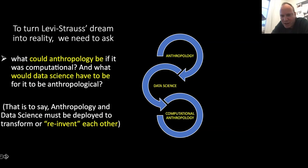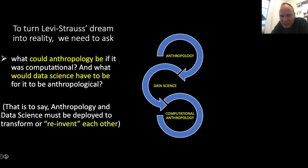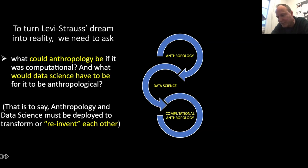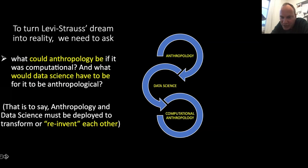In order to turn Lévi-Strauss's dream into a reality, we need to ask: what could anthropology be if it were computational? And what could computer science or data science be if it were anthropological? Anthropology and data science must be deployed to transform and reinvent each other. What comes out on the other side of creating a computational anthropology would hopefully be some productive distortion of not just anthropology's own foundations, but also that of data science. This relates to what I said about cultural sociologists in Chicago and elsewhere.